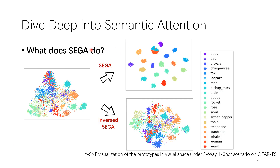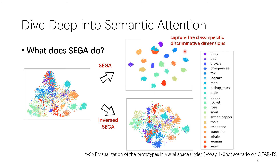Besides quantitative experiments, we also conduct qualitative experiments to dive deep into semantic attention. Our first question is: what does SEGA do? This is a t-SNE visualization of prototypes in visual space. As we can see, before the semantic attention, the visual prototypes are quite chaotic. But after applying it, the final prototypes become a lot more stable. More interestingly, when applying an inverse version of semantic attention, the prototypes get even more unstable and chaotic, which demonstrates that our SEGA can capture class-specific discriminative dimensions.